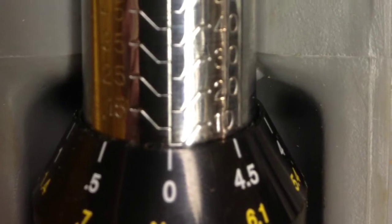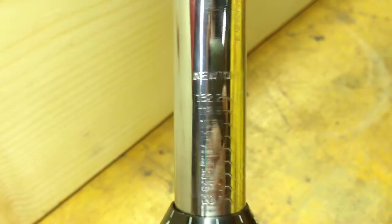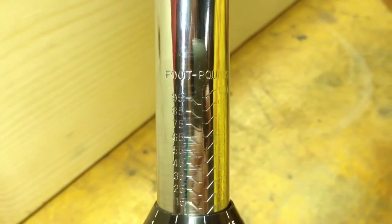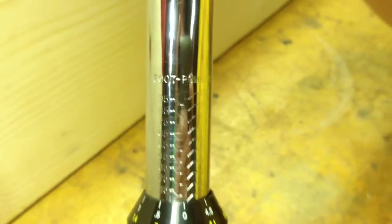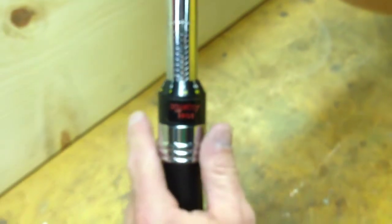You can see we start out here with it set at the minimum setting. This particular torque wrench can measure newton meters or foot-pounds of torque, and it's a three-eighths inch drive.